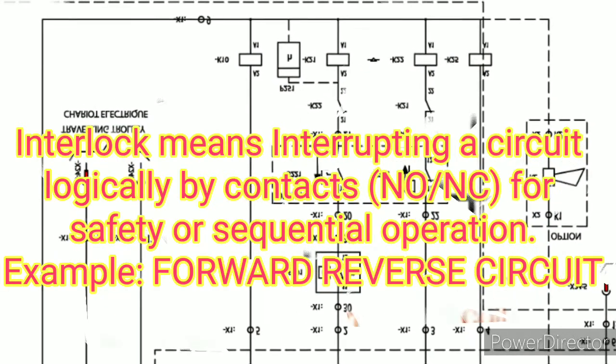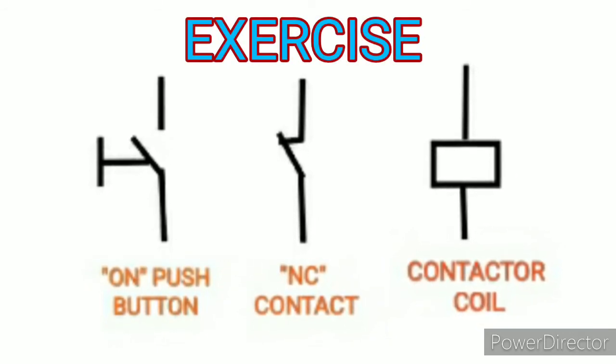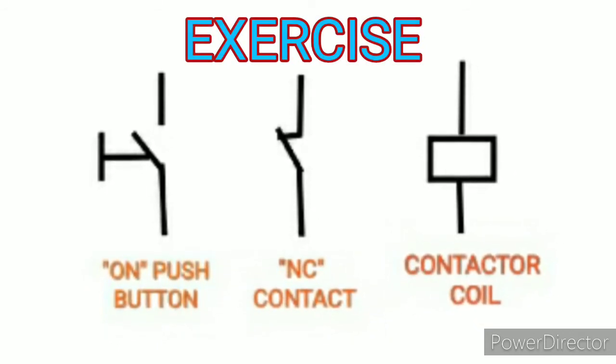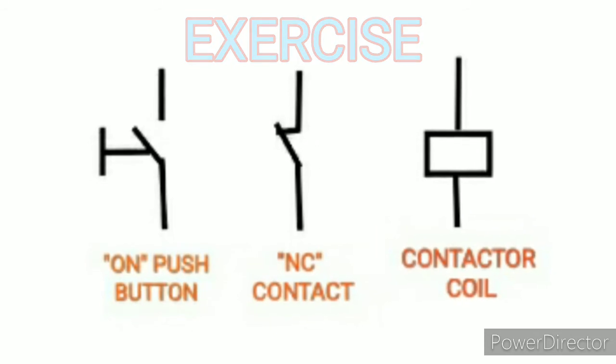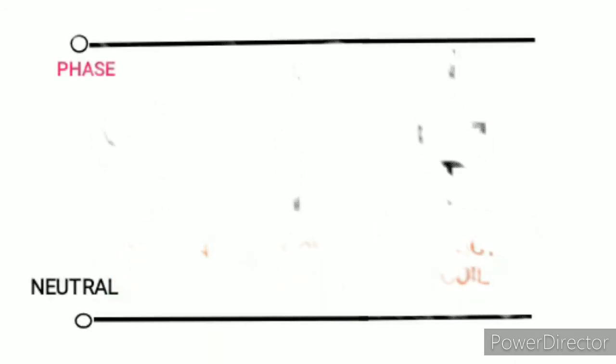Let's see a small example exercise. This is a small reminder for symbols: on push button, NC contact, contactor coil. Here we are going to try a small forward reverse logic. First of all, we are going to start a logic diagram.